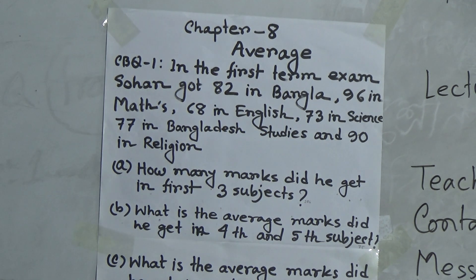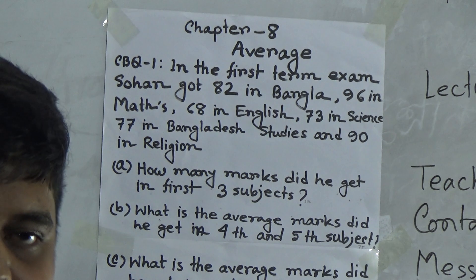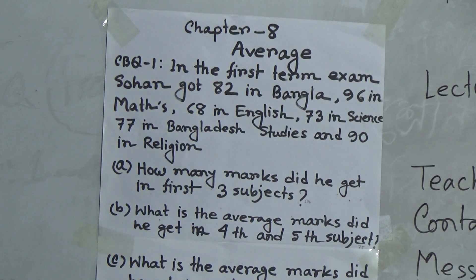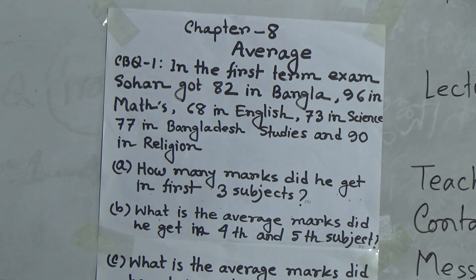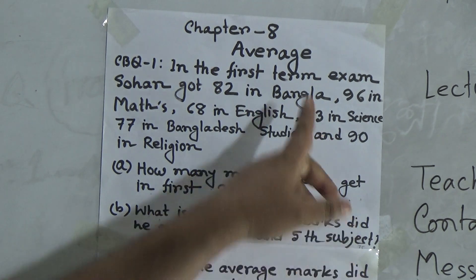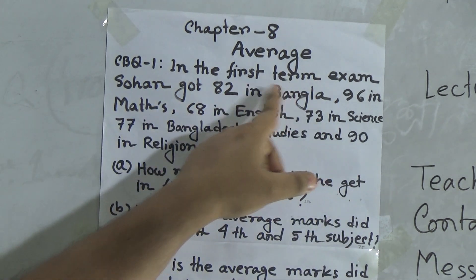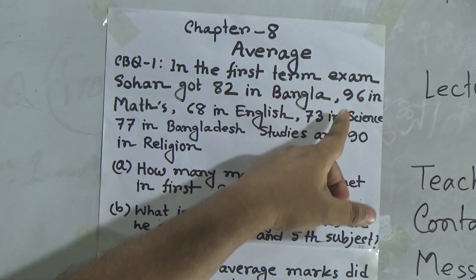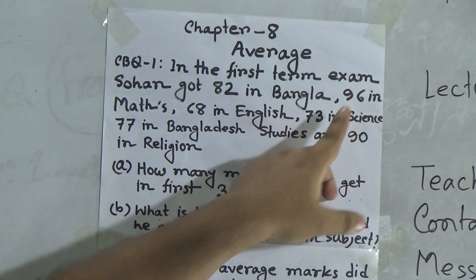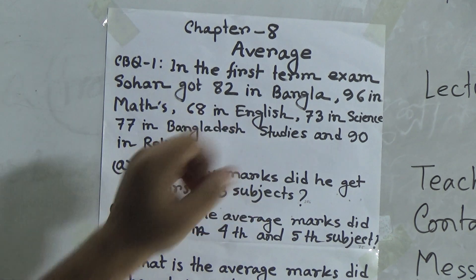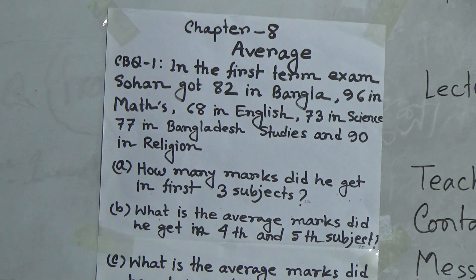By this information, we shall solve questions A, B and C. Question A: how many marks did he get in the first 3 subjects? The first 3 subjects are Bangla, Math and English. In Bangla he got 82 marks, in Math he got 96, in English he got 68 marks. That means we do addition and we get the answer.